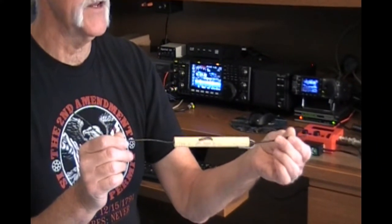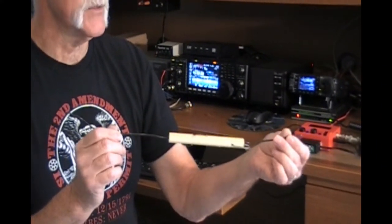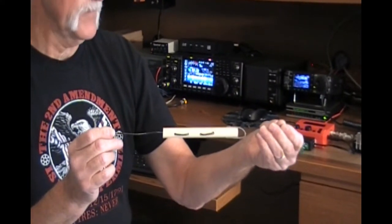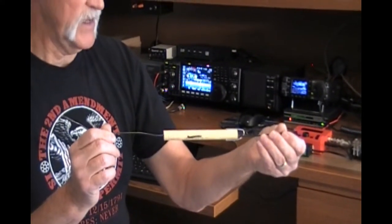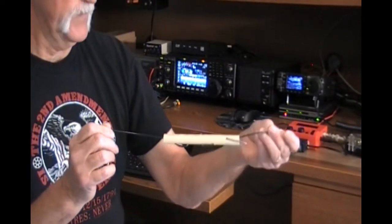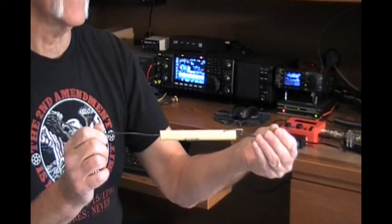This is the finished product of the end insulator. This insulator is made from a half inch piece of PVC, six inches long. It's drilled with a 9/64 inch drill bit that fits number 14 AWG wire perfectly.